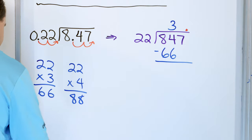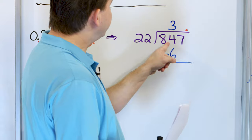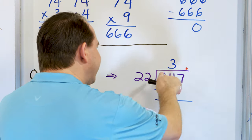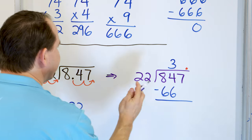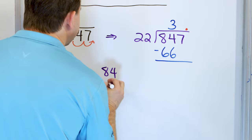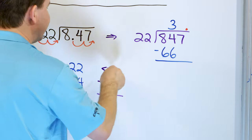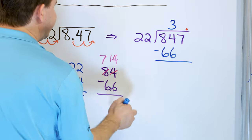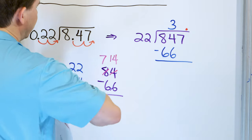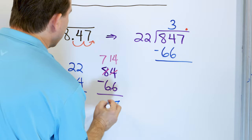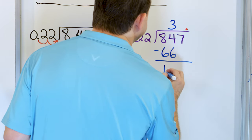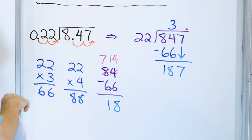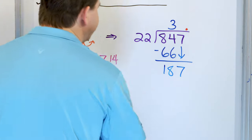Now we have to do 84 minus 66. It's difficult to do in our head, so let's go to the side. We can't do 4 minus 6, so we change the 4 to a 14 and borrow, making that a 7. 14 minus 6 is 8, and 7 minus 6 is 1. So the answer is 18. 84 minus 66 is 18. After we subtract, we pull the next digit down — and we have 187 there. I'm not totally sure what 22 times something equals 187, so I have to play with it a bit.